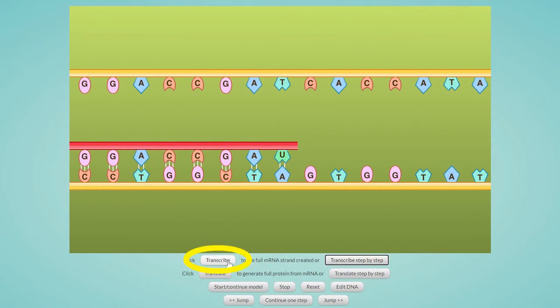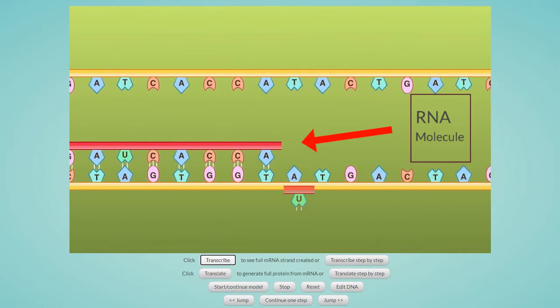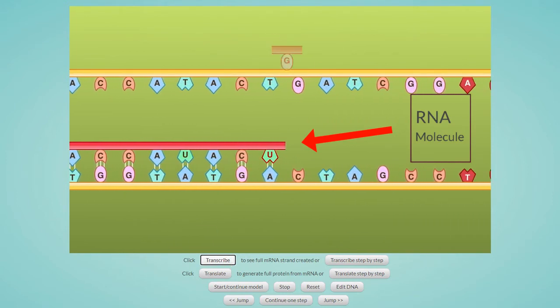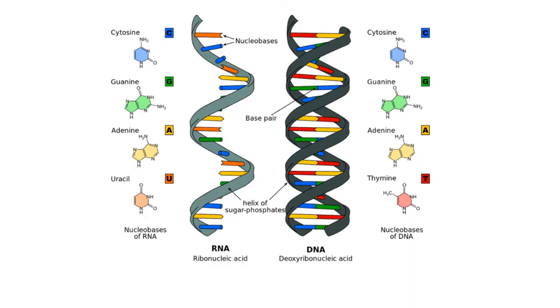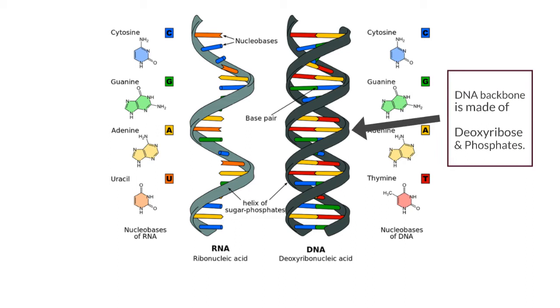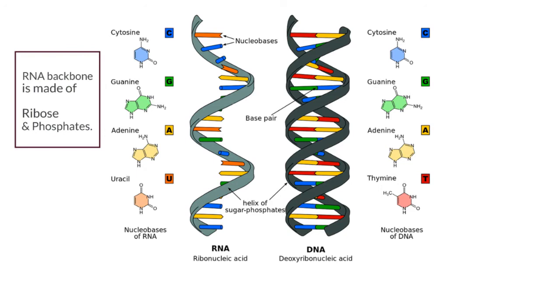I can click on transcribe if I want to speed up this process. As this runs, you can see that all of the new RNA molecule has a red line above it. This is meant to show us that the backbone of RNA is slightly different than the DNA backbone. Remember, the backbone of DNA alternates deoxyribose sugars and phosphates. The RNA backbone alternates ribose sugars and phosphates.